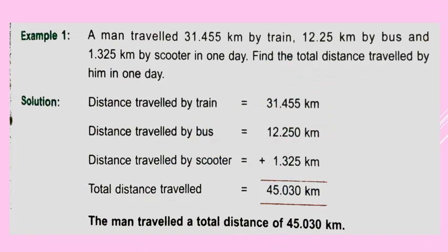See here the first example. A man travelled 31.455 km by train, 12.25 km by bus and 1.325 km by scooter in one day. Find the total distance travelled by him in one day. Now here we have to find the total distance travelled by that man in one day, so we have to add all three distances covered by train, by bus, and by scooter.